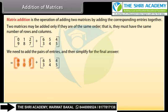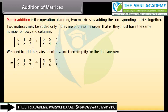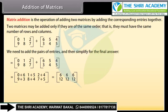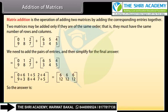[6, 5, 4; 3, 4, 5]. Adding corresponding entries: row 1: 0+6, 1+5, 2+4; row 2: 9+3, 8+4, 7+5. This equals row 1: 6, 6, 6; row 2: 12, 12, 12. So the answer is [6, 6, 6; 12, 12, 12].